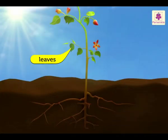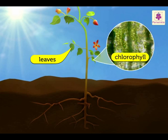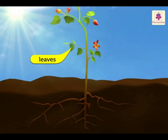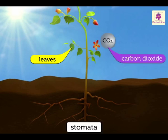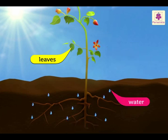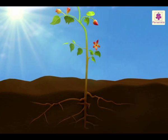The leaves trap the energy in sunlight using chlorophyll. This energy is used to make sugar from carbon dioxide, which they get through their stomata, and water which is absorbed by the roots. The process is called photosynthesis.